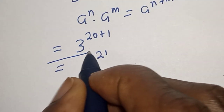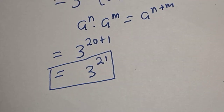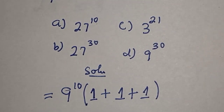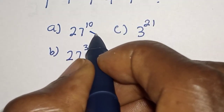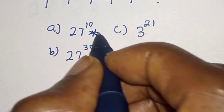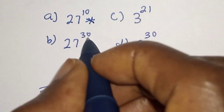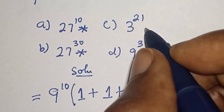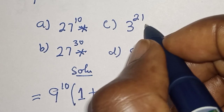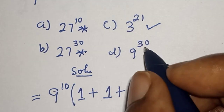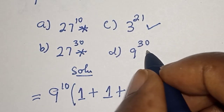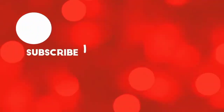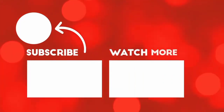Let's check the options to find the correct one. The answer is 3 raised to power 21, which matches option C. Before you leave, like, share, comment and subscribe. Thank you. Bye-bye.